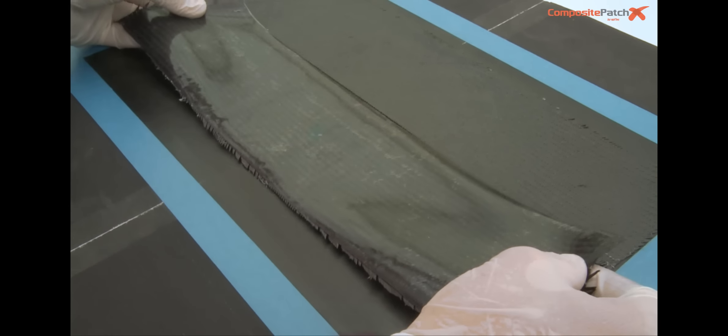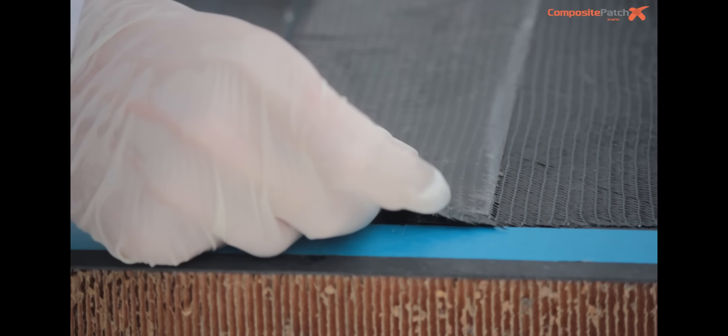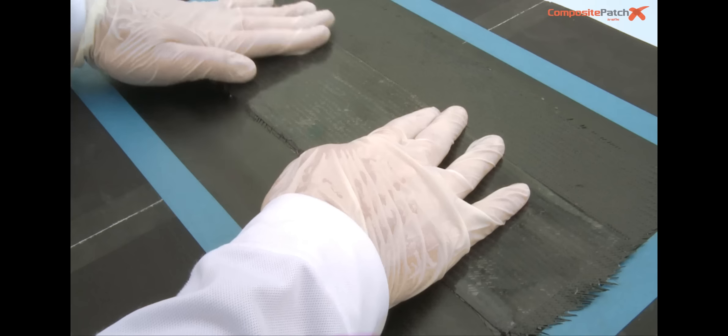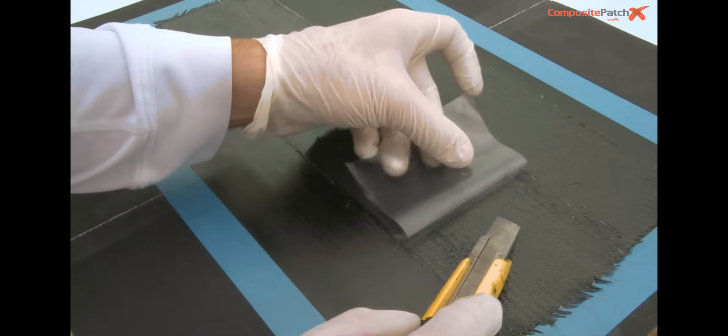If you need to repair an area larger than one patch, you can do it easily by using various patches while you overlap them by 5 cm when joining them. This will enable you to obtain a continuous and homogenous repair.